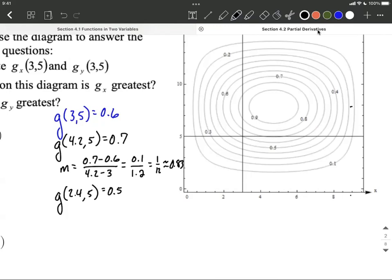Again we could calculate what's that average rate of change. In this case it would be like 0.5 minus the one we really care about, 0.6, divided by 2.4 minus 3, which works out to be negative 0.1 divided by negative 0.6, which is 1 sixth, or approximately 0.167.